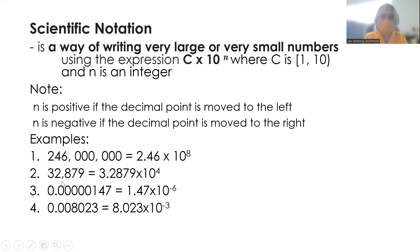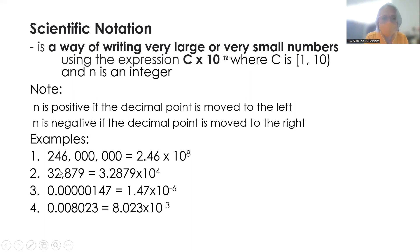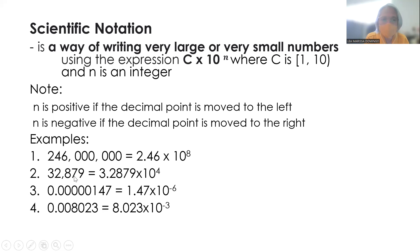So this one is 32,879. Again, the decimal point is at the end, after the digit 9. So we choose our c, and our c from among this is 3.2879, kasi dapat greater than or equal to 1 but less than 10. So 3.2879. And then the decimal point is moved to the left 4 times. So we have 3.2879 times 10 to the 4th power.